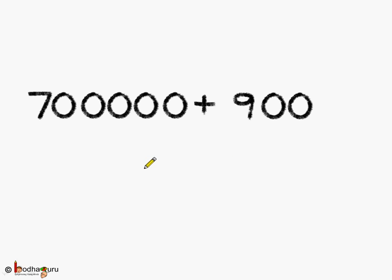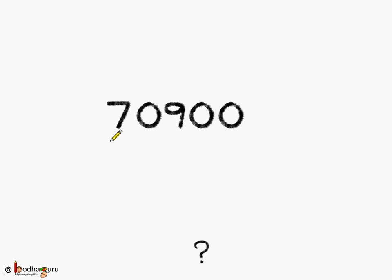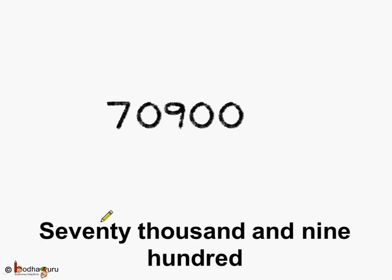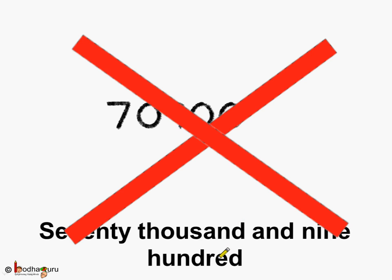Now, what is this? This is ones, tens, hundreds, thousands — 7,00,000 plus 900. You may quickly write it as 7,0,9,00 to get a number, but is this correct? No — this gives 70,900, which is not what we wanted.